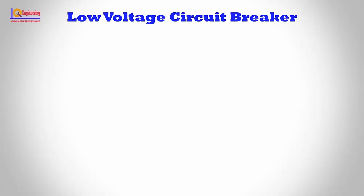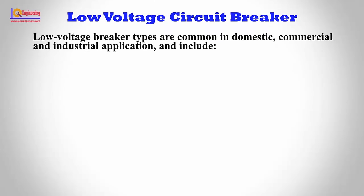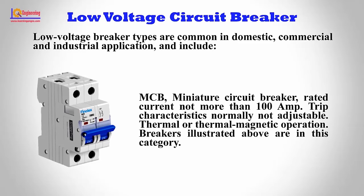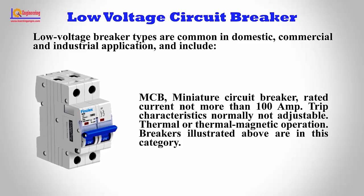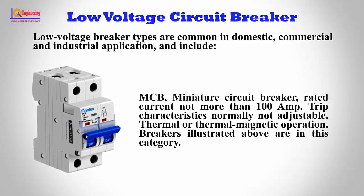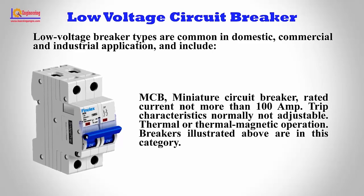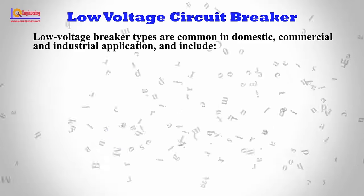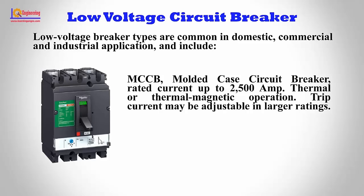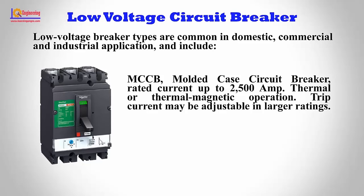Low Voltage Circuit Breakers are common in domestic, commercial, and industrial applications and include MCB (Miniature Circuit Breaker), rated current not more than 100 A, with trip characteristics normally not adjustable, using thermal or thermal-magnetic operation. MCCB (Molded Case Circuit Breaker) is rated current up to 2500 A with thermal or thermal-magnetic operation; trip current may be adjustable in larger ratings.